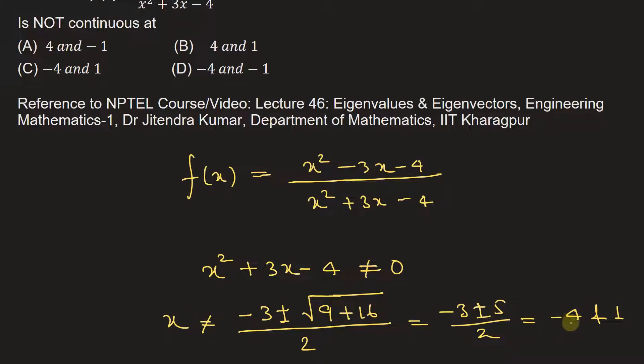So for x is equal to minus 4 and 1, this function f(x) is not defined. Therefore, at this point, the function is not continuous.